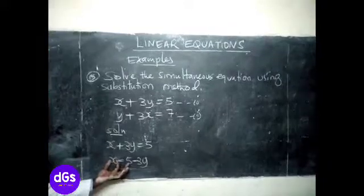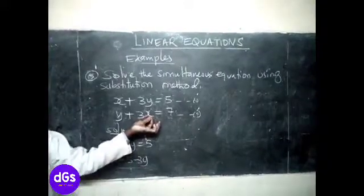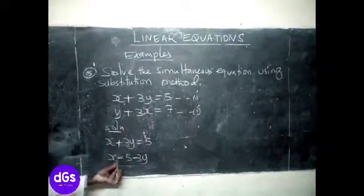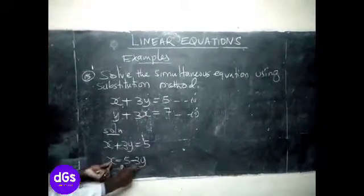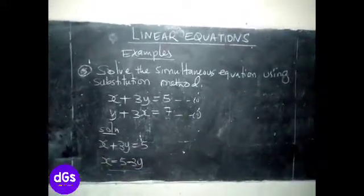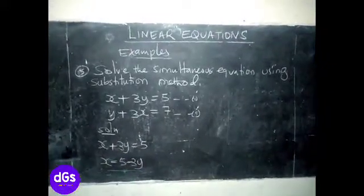Now, you shall take this value of x and substitute it in the second equation. So we substitute this, instead of having to write x here, we write 5 minus 3y. Let's see.